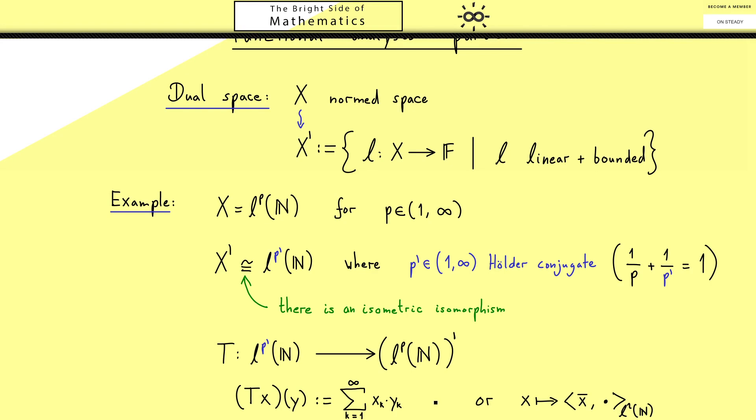This is something you may have noticed immediately: this definition is just the inner product in L2, only the complex conjugation is missing here. And therefore we have to add it here. I already told you the idea for the definition comes from the Holder inequality but still we have to check that everything works here.